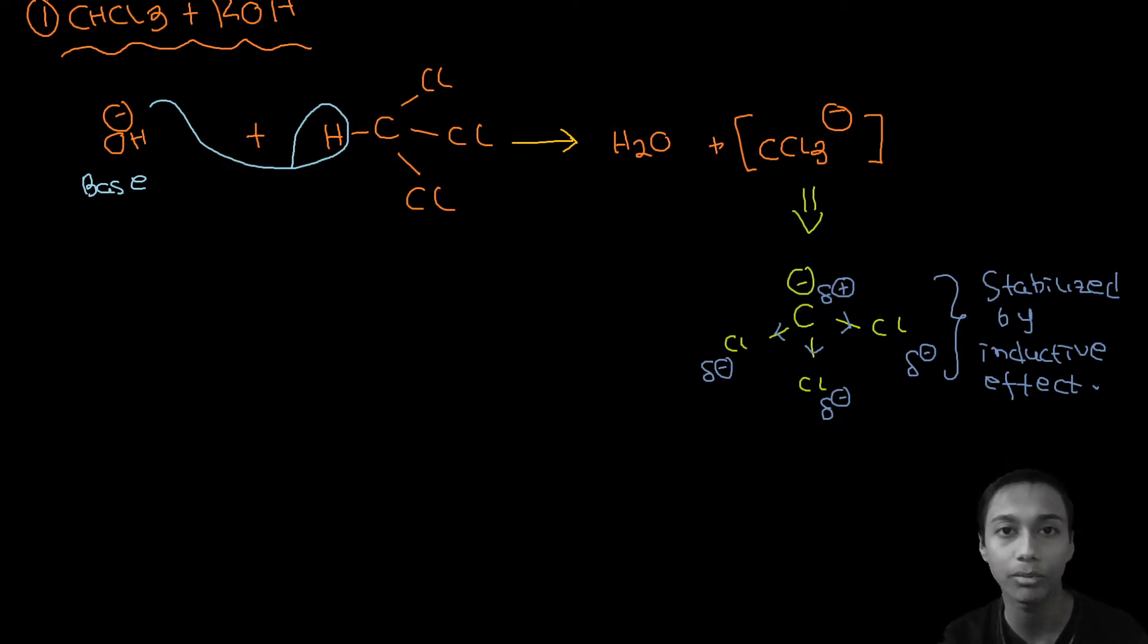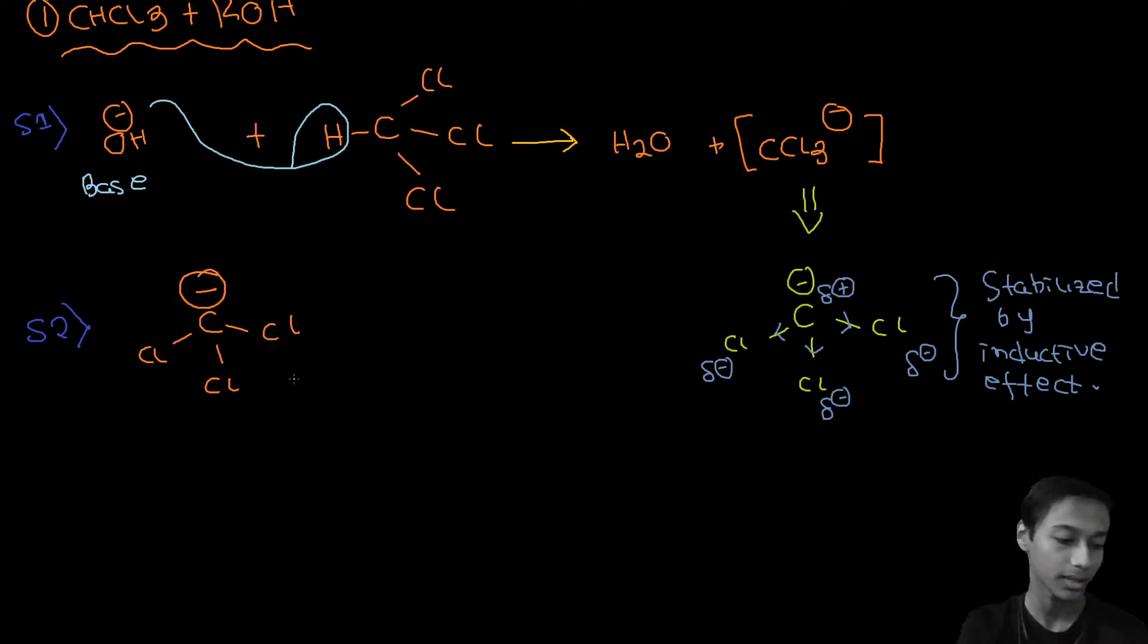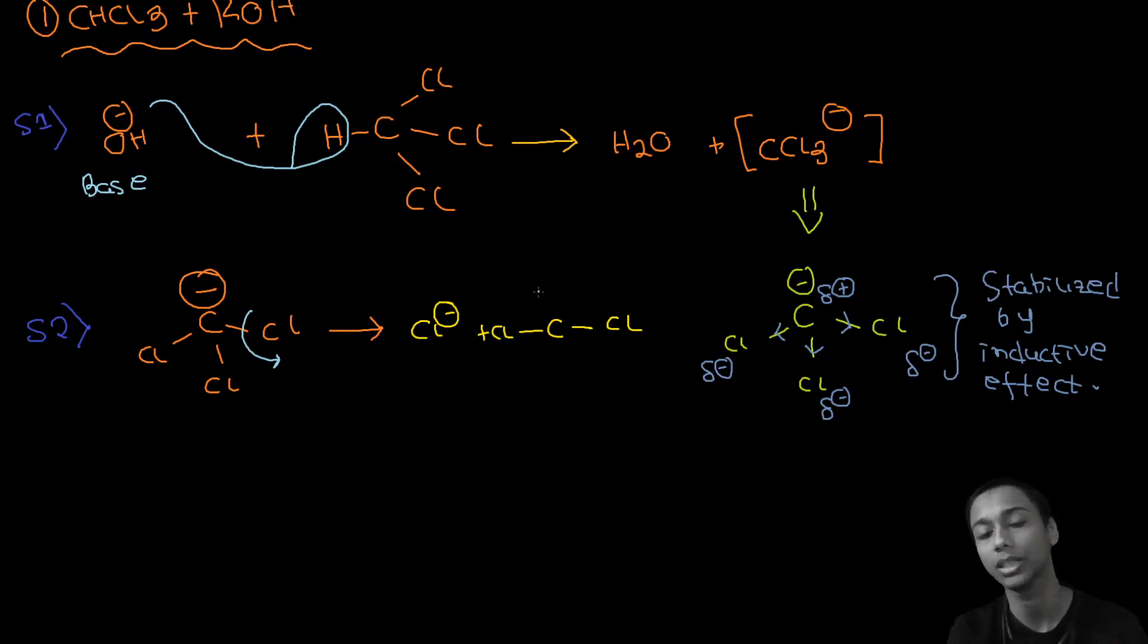This was the first step of the reaction. Now in step 2, what happens is, here is our CCl3 minus. One of the chlorine leaves, because chlorine is highly electronegative and Cl minus is stable. So what will we get? First of all, we will get Cl minus. And we have carbon with two chlorines. One of the orbitals would have both the electrons, and the other orbital would lose its electrons. So what we would get here is, if you remember from the previous video, this is called a singlet carbene.